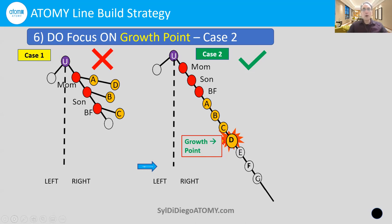You're going to do the positive thing of putting A, B, C, and D underneath your mom, your son, and your best friend. So you're making a strong line, and this is going to benefit everybody together. Everybody is going to have the advantage of the point values being purchased all the way from the bottom line up the line, and that's very good for all of them.